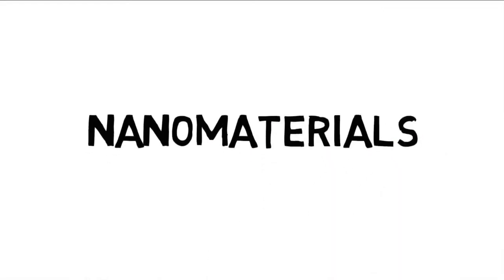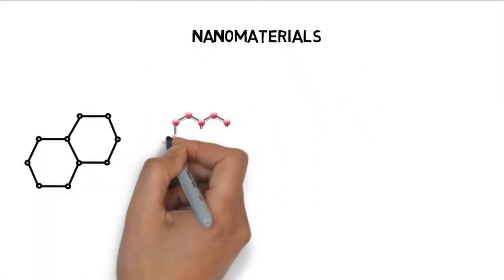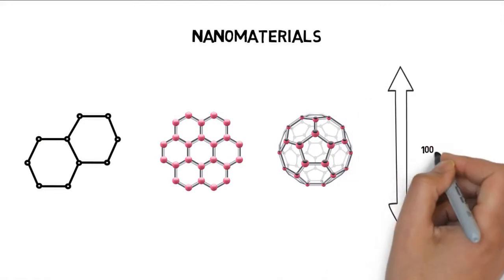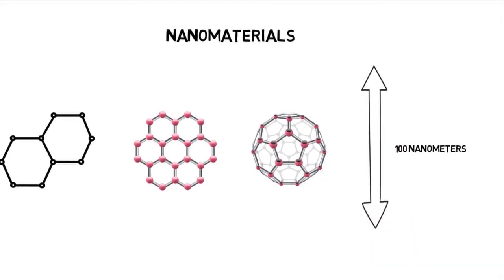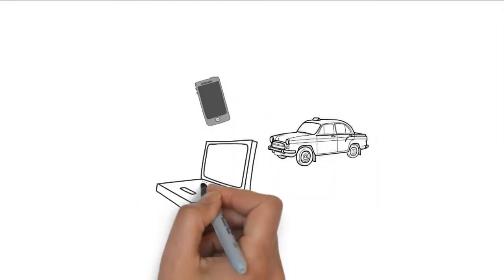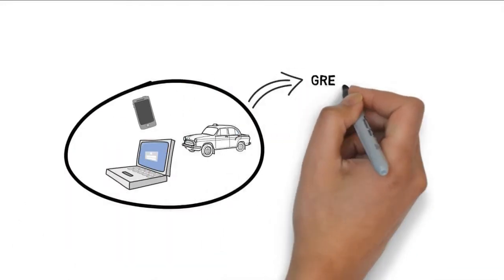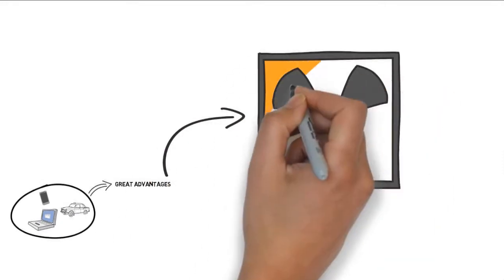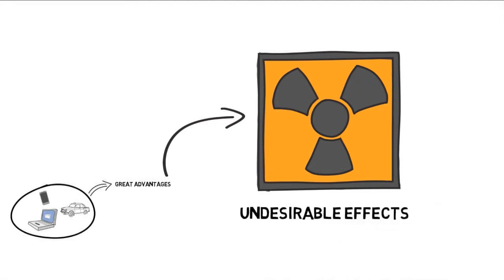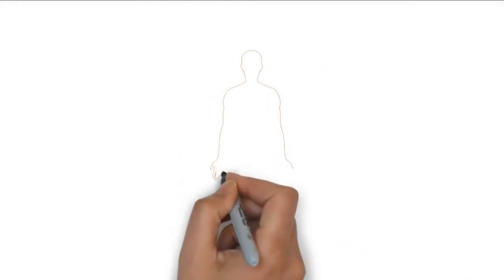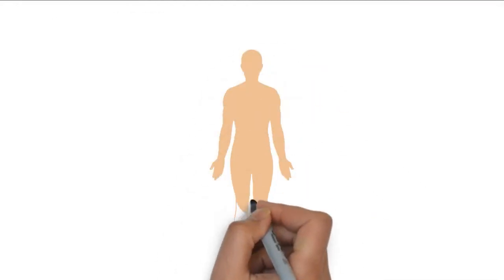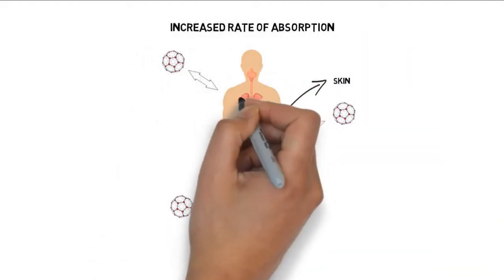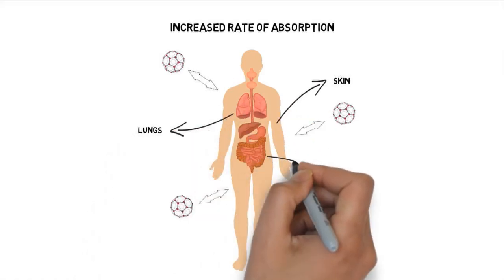Nanomaterials are composed of particles in an unbound state, or as an aggregate or agglomerate, with at least one dimension below 100 nanometers. While their use in technology offers great advantages, this use and manipulation could cause undesirable effects on human health or the environment. Nanomaterials have an elevated ratio of surface area to volume, and this may lead to an increased rate of absorption through the skin, lungs, or digestive tract.